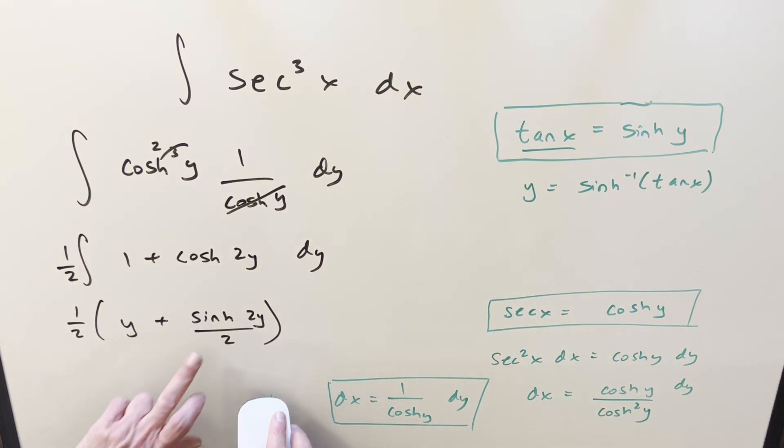If I just take sinh inverse on both sides, we end up with y equal to sinh inverse tan x. And then actually before I back substitute, let's get this out of two y. We'll use an identity. This is going to be the same thing as the double angle for sinh, which means I can rewrite this as two sinh y cosh y. But then what that allows me to do is I can cancel twos out right here.